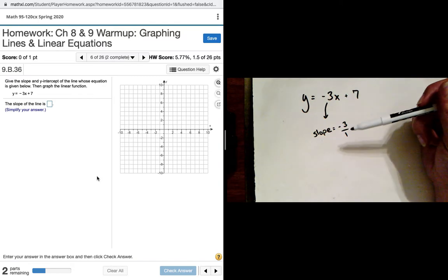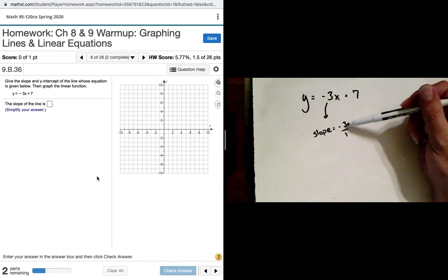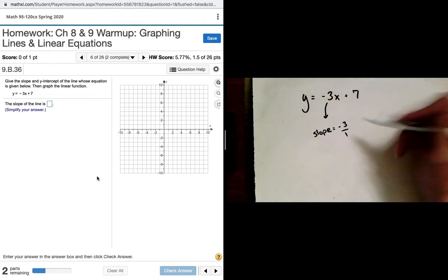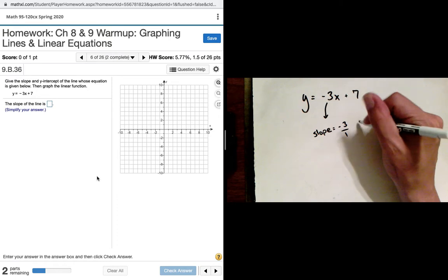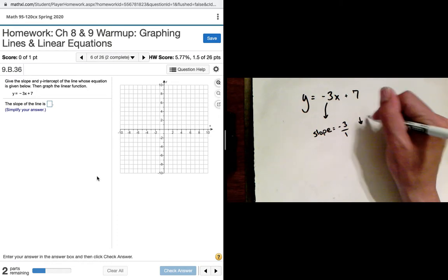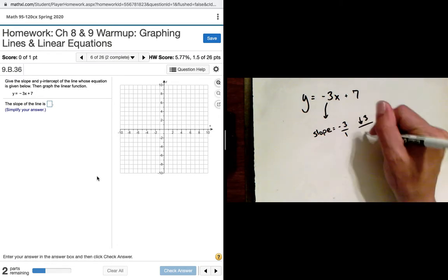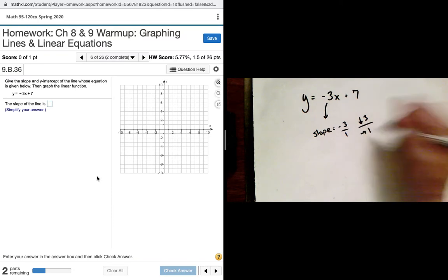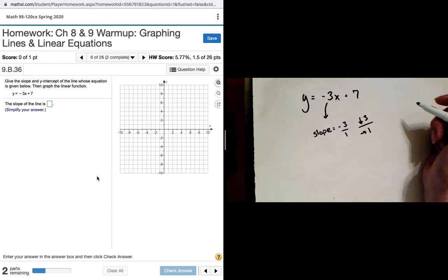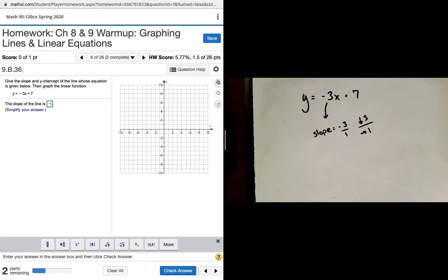When I write my answer in over here, I can simply just say negative 3. But when I go to graph, it's going to be really important that I express all slopes as fractions. Because remember, slope consists of two different movements. A movement in the y value, expressed on the top, and then a movement on the x value, expressed on the bottom. In other words, this slope right here is going to tell me to go down 3 units, and then to the right 1 unit, as I go from one point to the next.